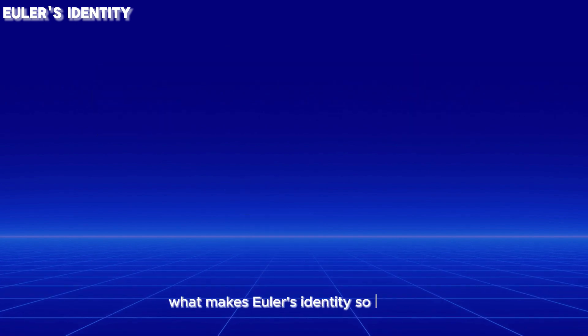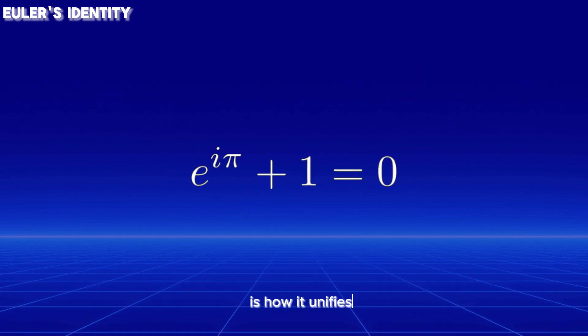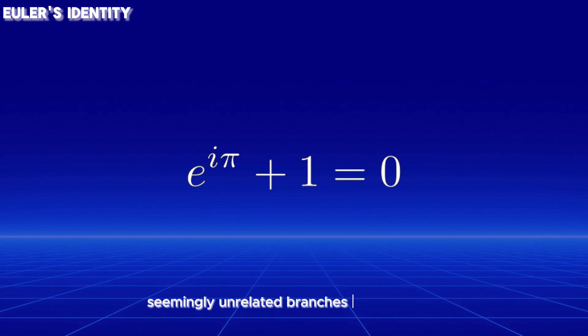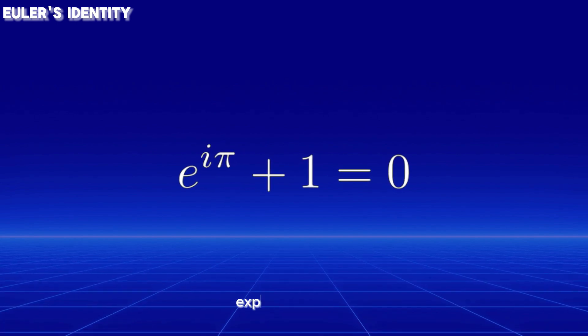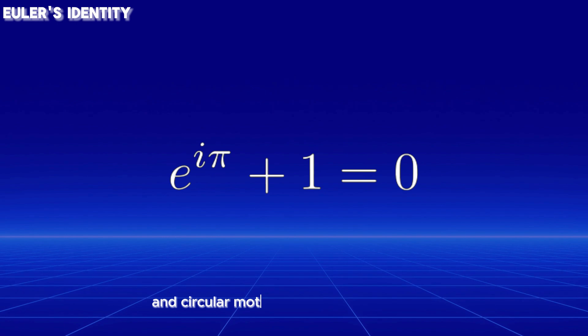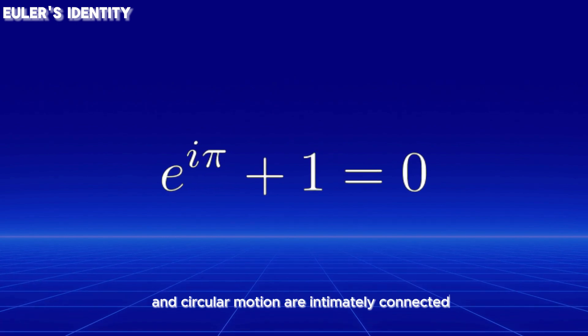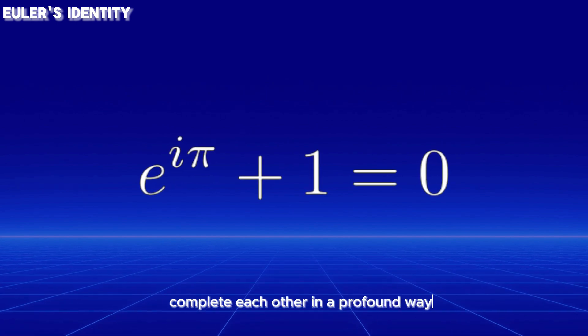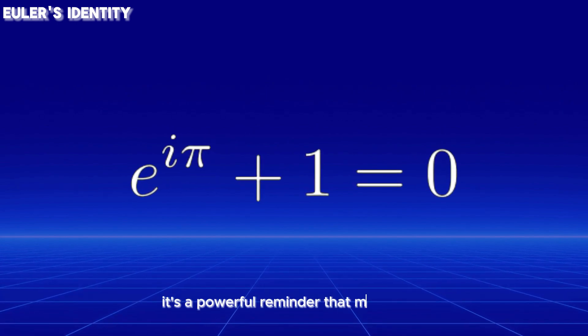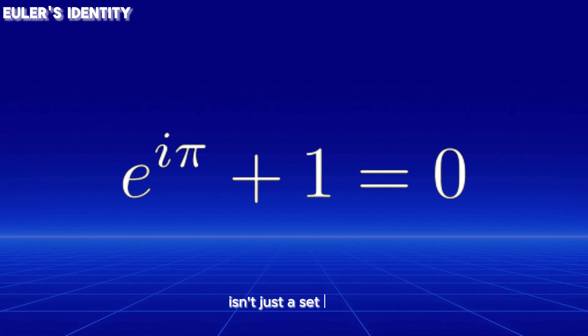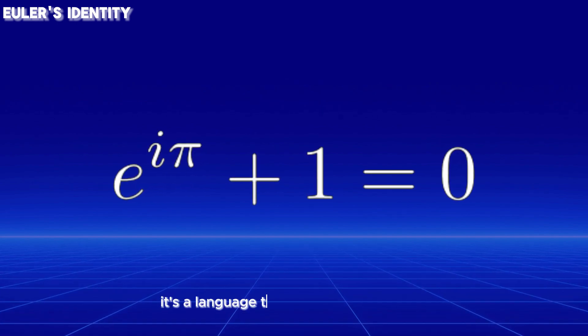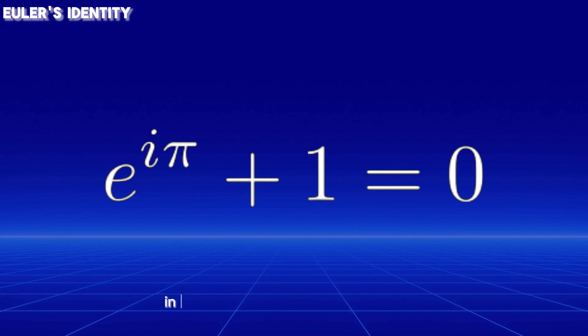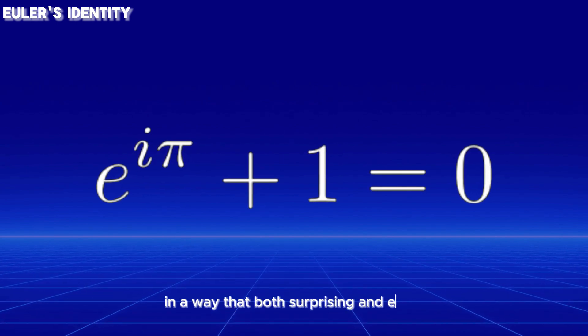What makes Euler's identity so beautiful is how it unifies seemingly unrelated branches of mathematics. Exponential growth and circular motion are intimately connected. Real and imaginary numbers complete each other in a profound way. It's a powerful reminder that mathematics isn't just a set of rules. It's a language that describes the universe in a way that is both surprising and elegant.